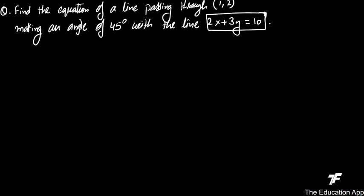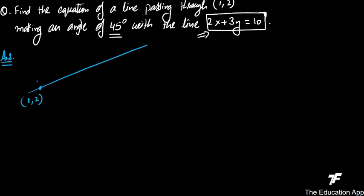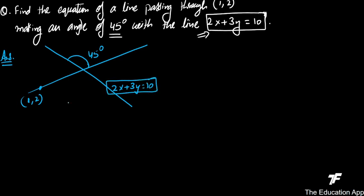यह question बिलकुल आसान है। एक line की equation निकालनी है जो (1,2) से pass करेगी और 45 degree का angle बनाएगी इस line के साथ। The given line equation is 2x + 3y = 10.